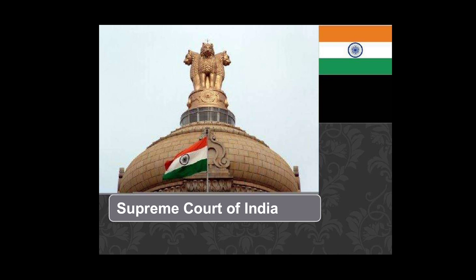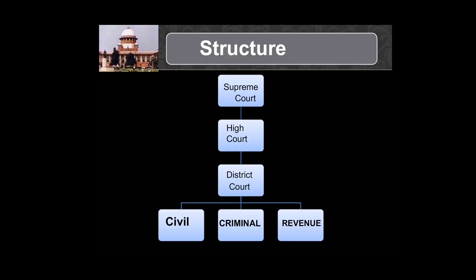At the apex level, we have the Supreme Court. Below the Supreme Court, we have the High Courts, and below the High Courts, we have the Subordinate Courts. The Subordinate Courts are of three kinds: Civil Courts, Criminal Courts, and the Courts of Revenue.